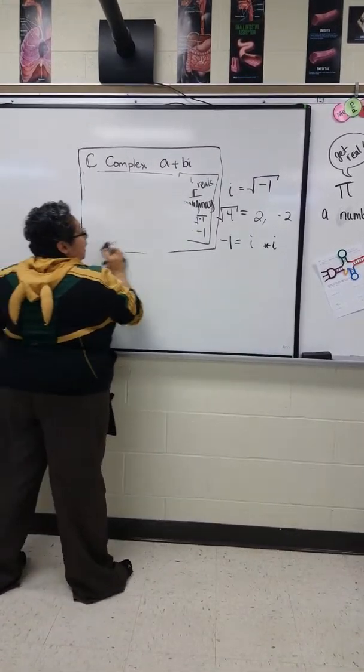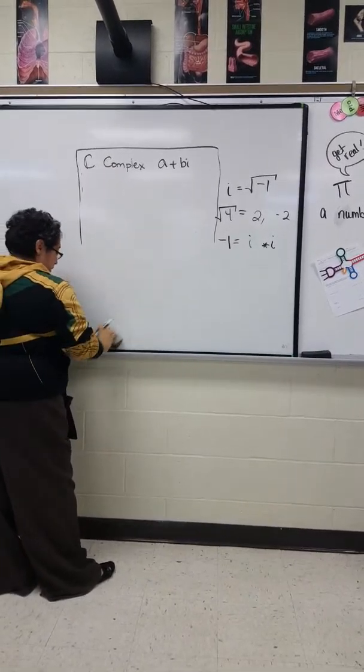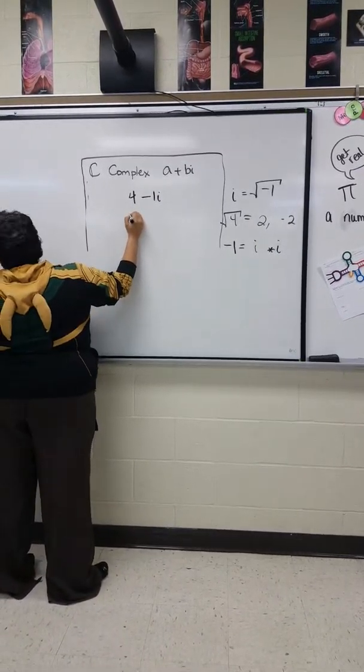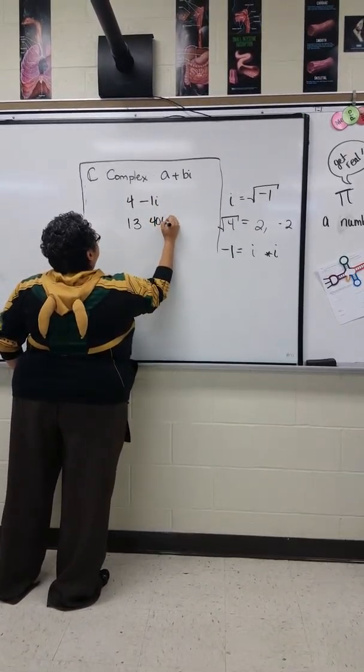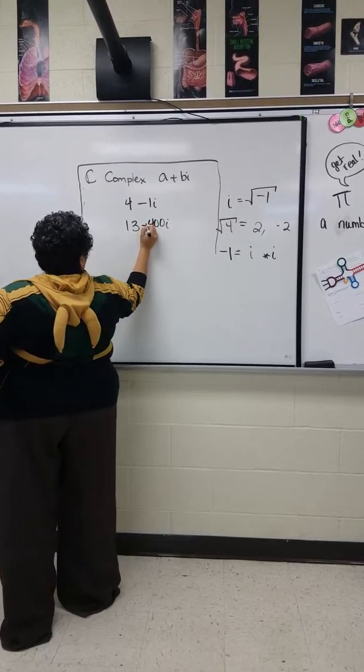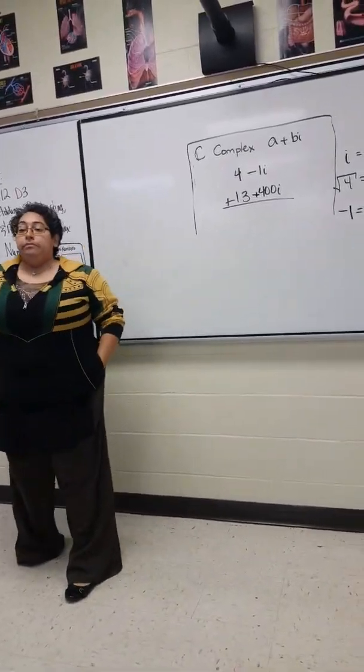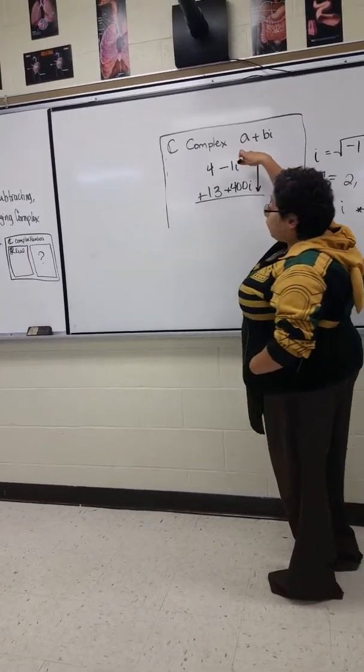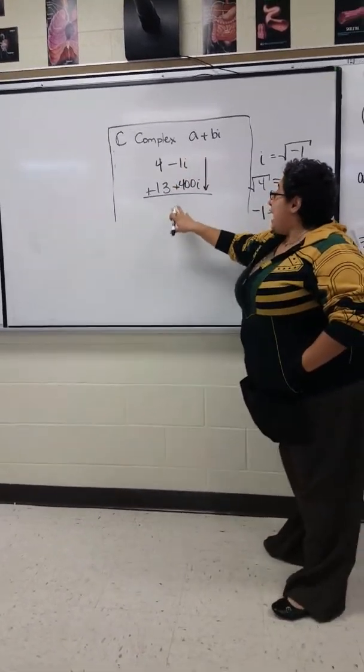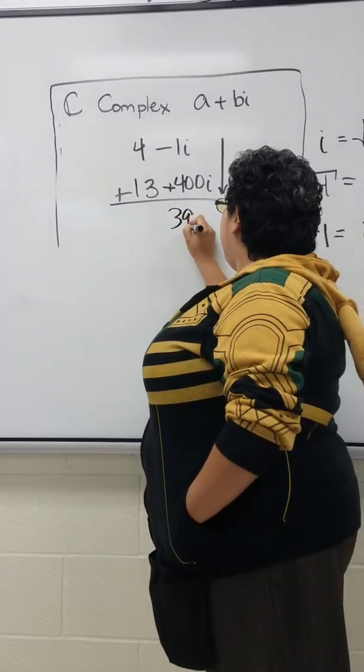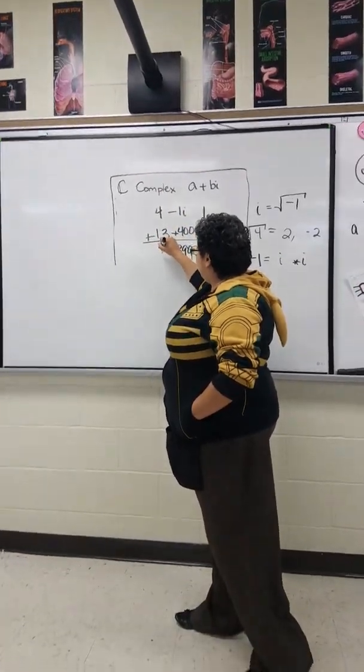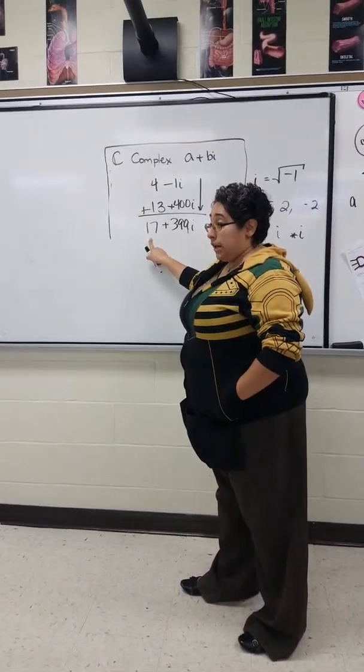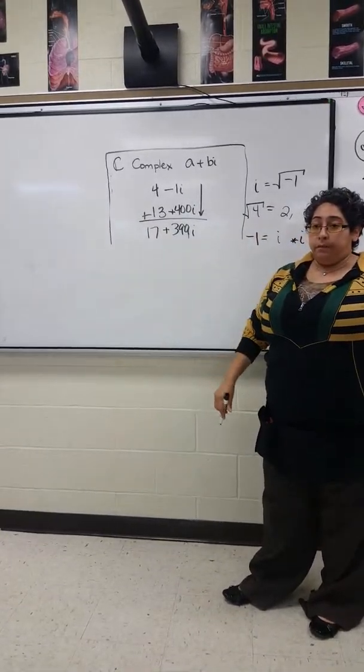I'm going to play with some stuff now. I would like some numbers, positive or negative, some integers, please. Four. Negative one. I need some more. Thirteen. Four hundred. Positive four hundred. And if I said add, what would we do? We're going to do this negative one on the I and add it to the four hundred on the I. Three hundred and ninety-nine I. And then here. Seventeen. We're done. That's it. That's the answer.